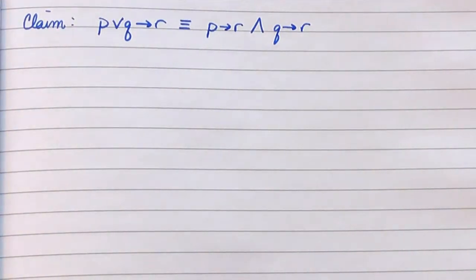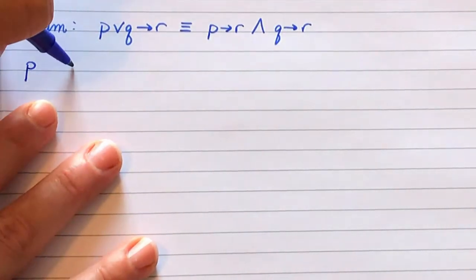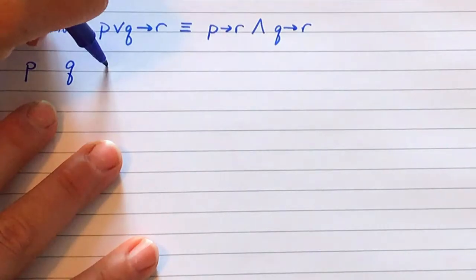To prove this logical equivalence, we need a truth table. We have three component variables, so we are going to make three columns for P, Q, and R.